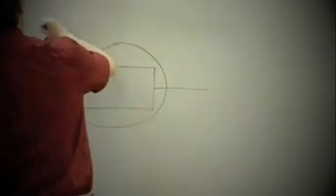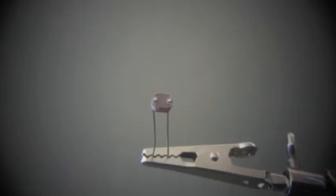A photoresistor is a resistor that can detect light, and it looks like this.